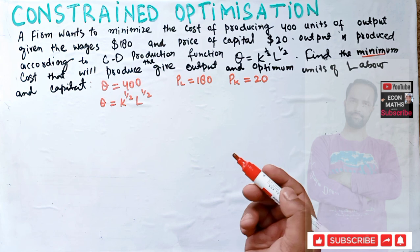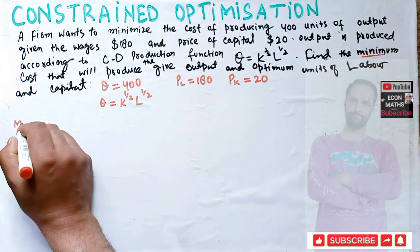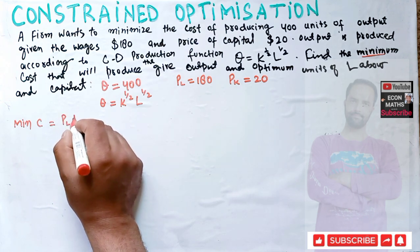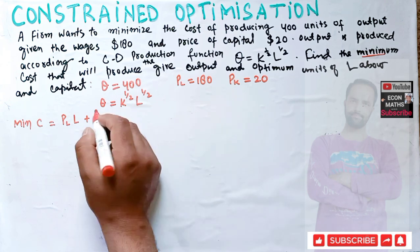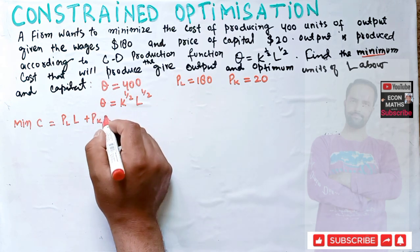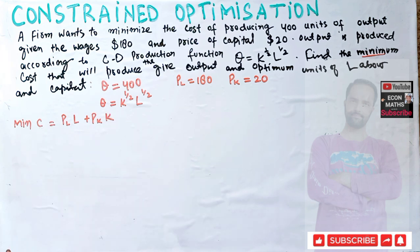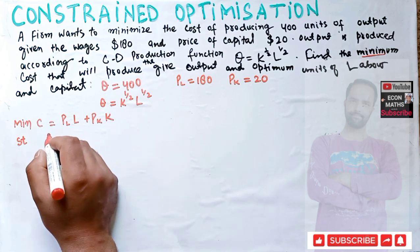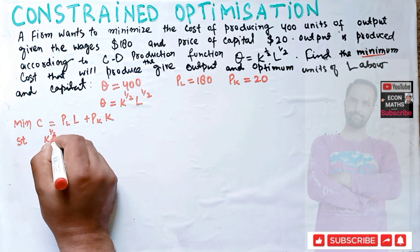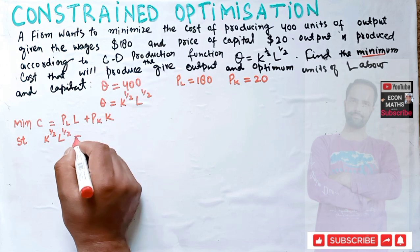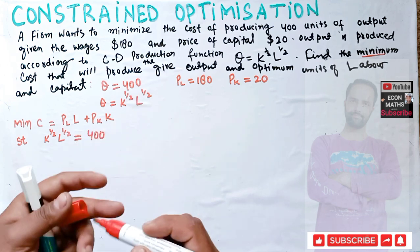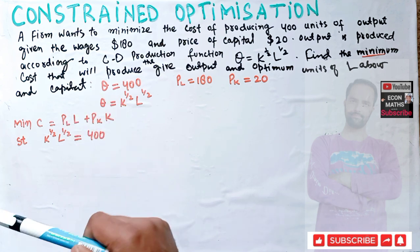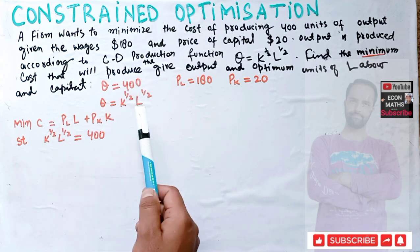This is the cost minimization problem. We want to minimize cost C = price of labor × units of labor + price of capital × units of capital. With the given values, this becomes C = 180L + 20K. Our constraint is the production quota: K^(1/2) · L^(1/2) = 400. We want to minimize 180L + 20K subject to this production constraint.